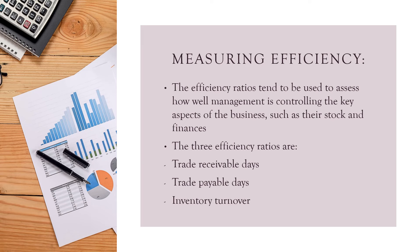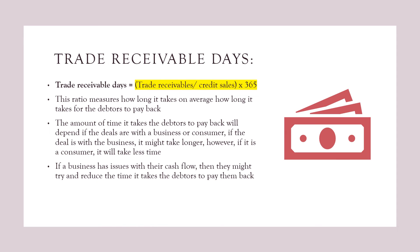Measuring efficiency. The efficiency ratios tend to be used to assess how well management is controlling the key aspects of the business, such as their stock and their finances. The three efficiency ratios are trade receivable days, trade payable days, and inventory turnover. Trade receivable days is trade receivables divided by credit sales times by 365. This ratio measures how long it takes on average for the debtors to pay back. If the deal is with a business, it might take longer for them to pay back; if it's a consumer, it might take less time.